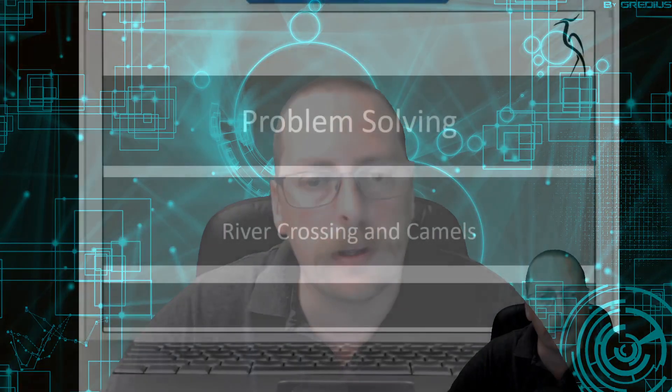Here we are looking at the fourth week of problem solving and algorithms and flow diagrams. This week I'm not going to get you to draw a flow diagram, I'm going to get you to solve a problem in a different way. We will be looking at a river crossing and a camel's problem for you to complete and solve.